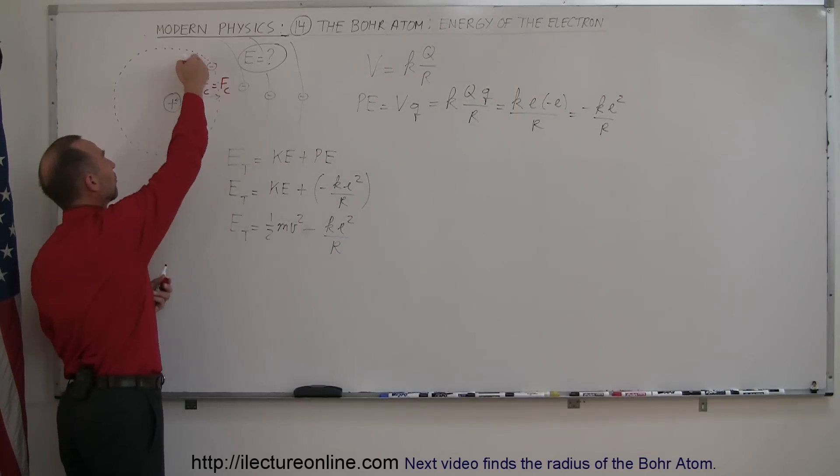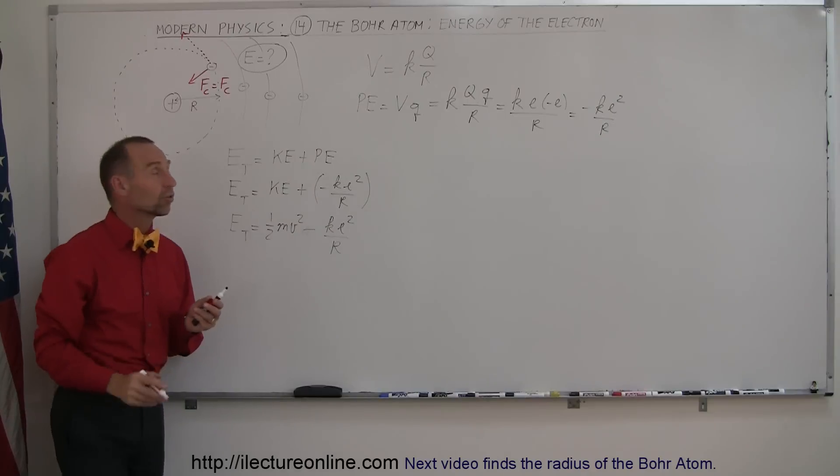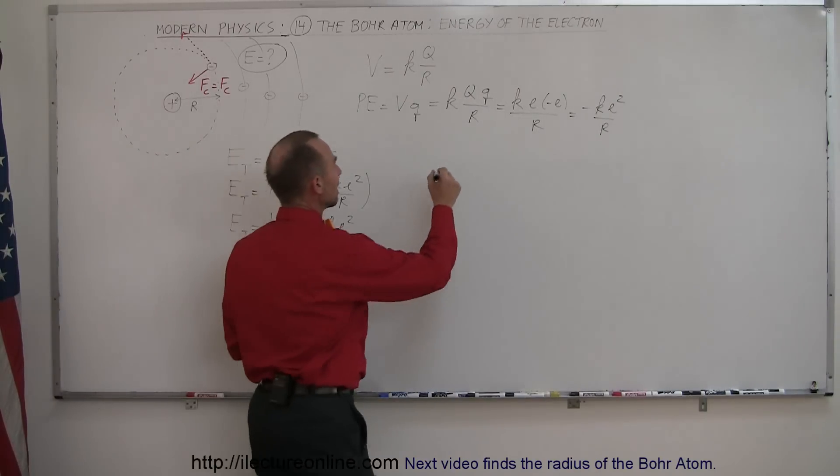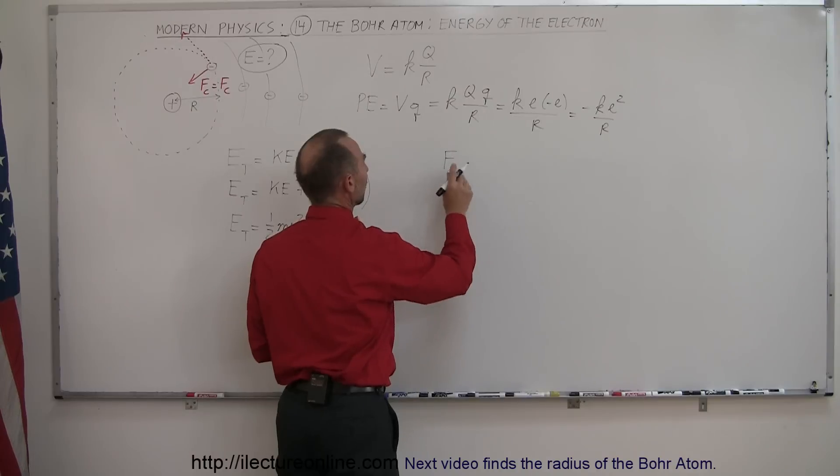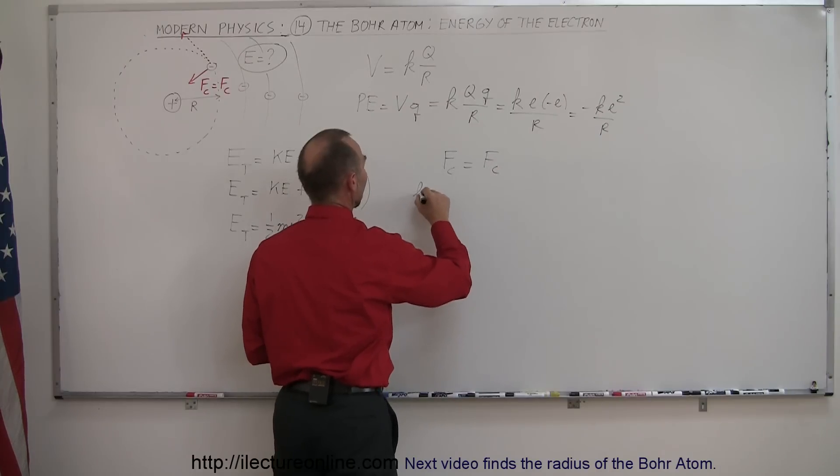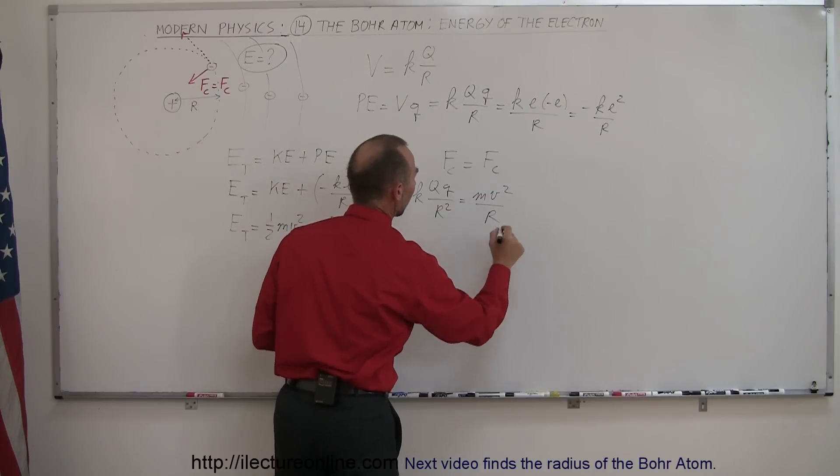It's the centripetal force that causes the electron to travel in an orbit, otherwise the electron would follow Newton's first law and just keep going in a straight line. The force of attraction between the two charged particles must equal the centripetal force, so KQq divided by r² equals Mv² over R.